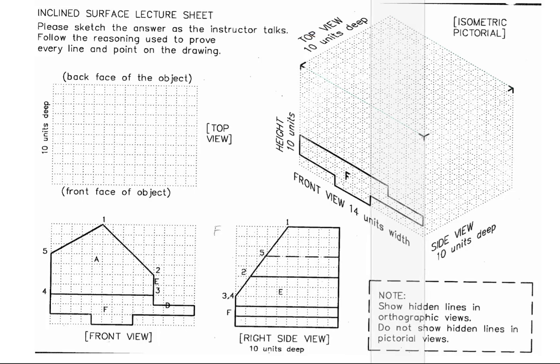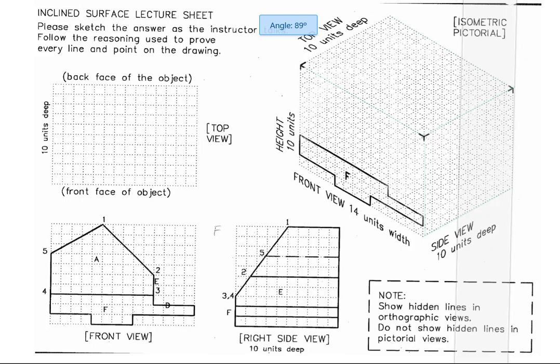Draw the glass box in the isometric view, which helps track the locations of the surfaces.